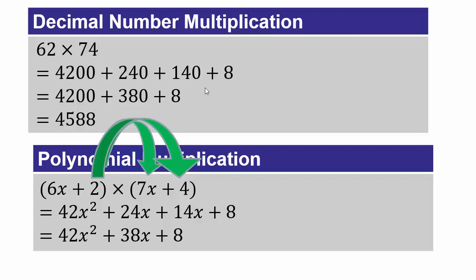Look at the parallels between this problem and this problem. Here all the terms could be added together, but x squared and x cannot be added together, so the polynomial stays as is — just like in addition we had to handle that.